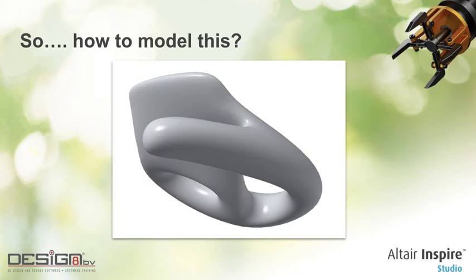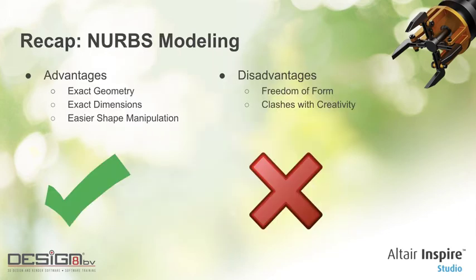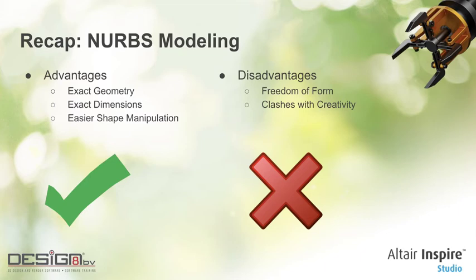In short, NURBS modeling has advantages: it can represent really exact geometry and exact dimensions. You can create complex shapes which are easy to manipulate by the input curves. But it has disadvantages — there is a drawback in freedom of form, not everything can be modeled, and in my opinion, it clashes with creativity very often. As soon as you introduce intelligence to a system, that clashes with creativity.